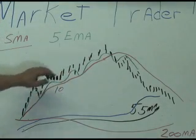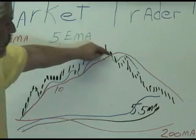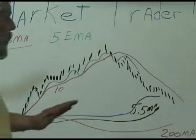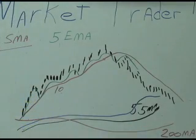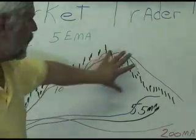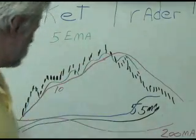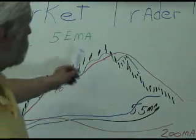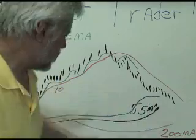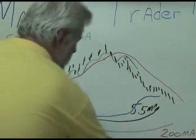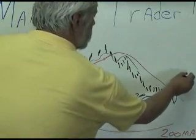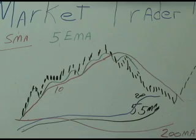What you're waiting for is the 5 to cross underneath the 10 and the price to cross underneath the 10 — then you can start thinking about getting out, but you're not ready yet. We're on the very tip top of the market here. You really don't want to pull the plug on this price until it comes down to the 20, because a lot of times that price can hit that 20 and bounce right back off and start going back up. So that's really important.